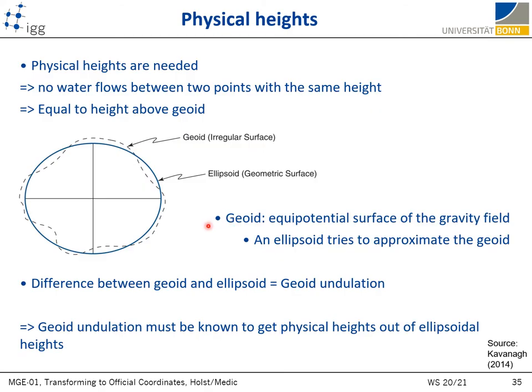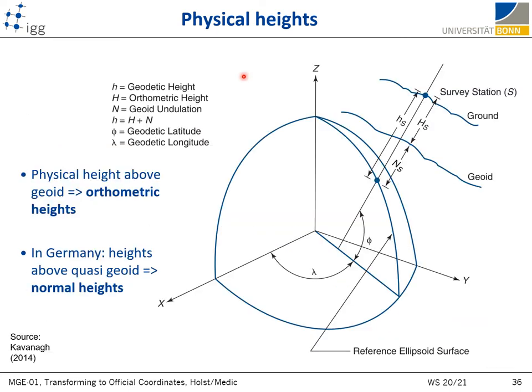To summarize: the geoid is an equipotential surface of the gravity field with an irregular shape, while the ellipsoid is just an approximation of the geoid for the simplicity of numerical calculations. The height difference between the geoid and the ellipsoid is called geoid undulation, and it needs to be known in order to get physical heights from ellipsoid heights. Geodetic engineers have invented a whole philosophy about different height systems. What is important to remember is that geodetic or ellipsoid height equals geoid undulation plus orthometric or physical height above the geoid.